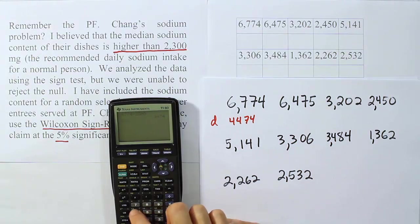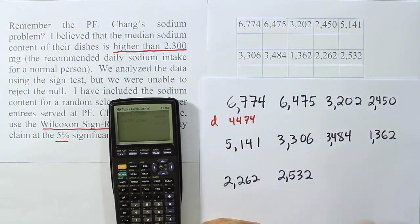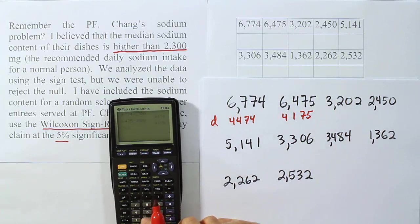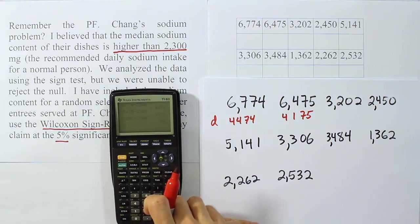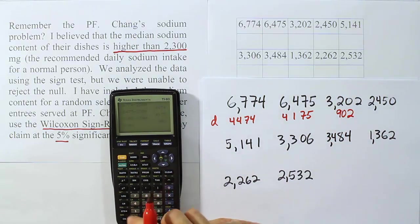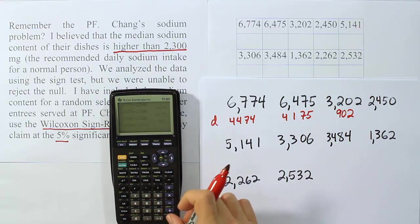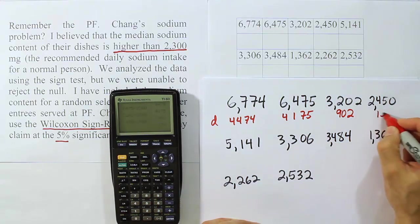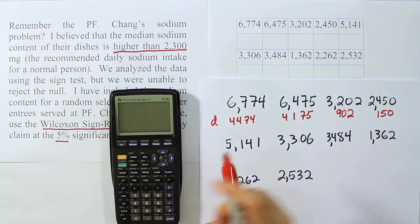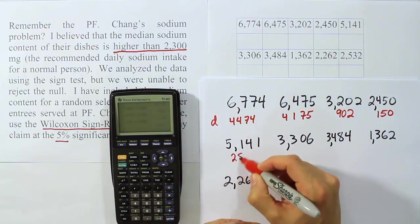Then the next one is 6475 minus 2300, and we get 4175. Next one is 3202 minus 2300, I get 902. Then 2450 minus 2300, I get 150. Then 5141 minus 2300, I get 2841.